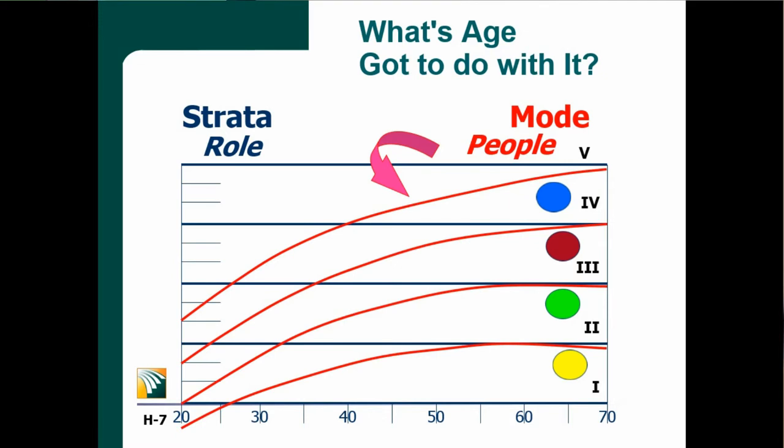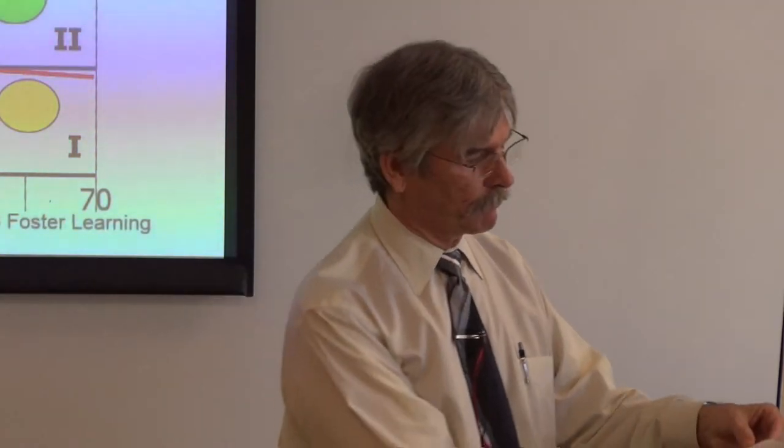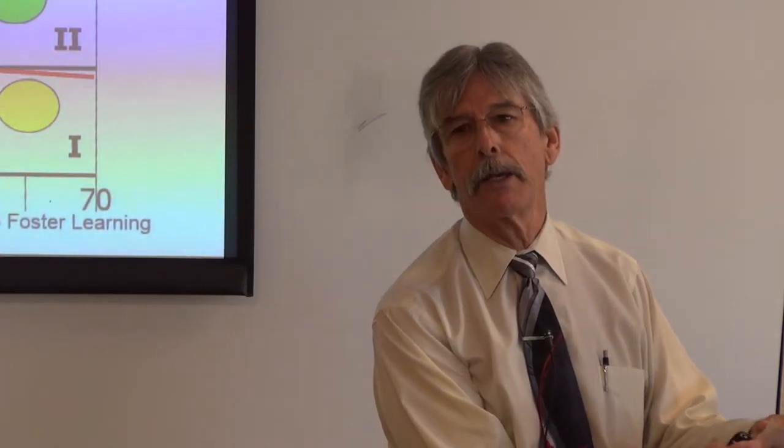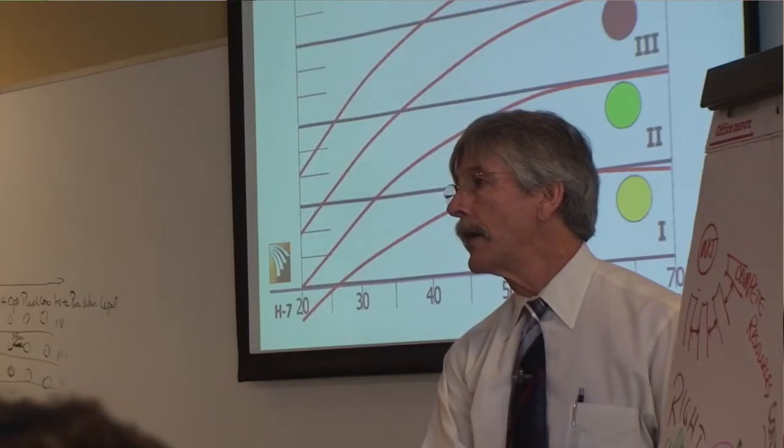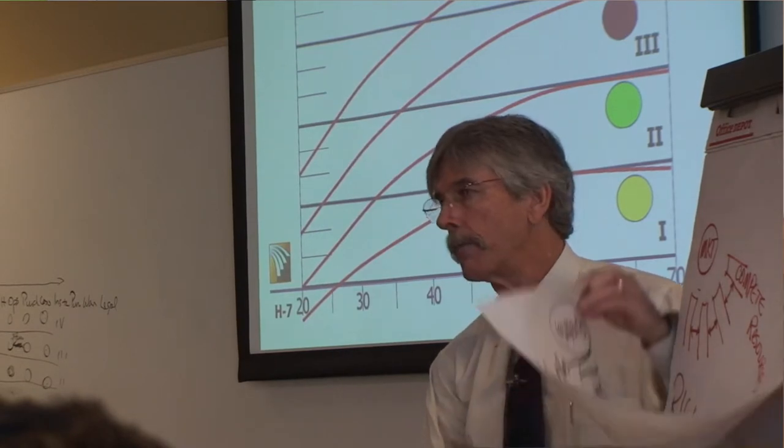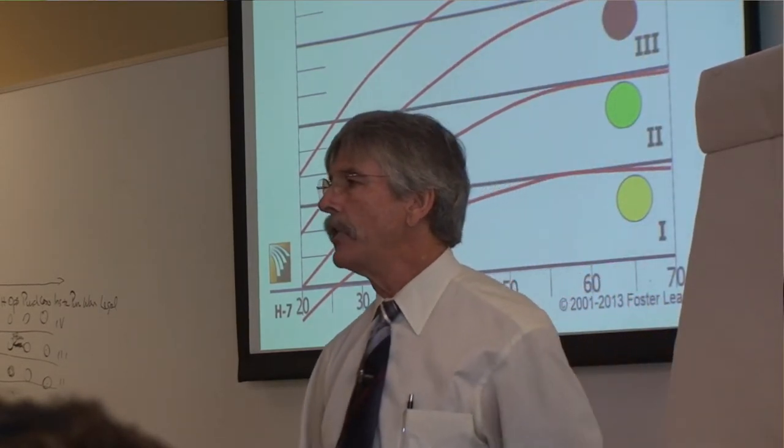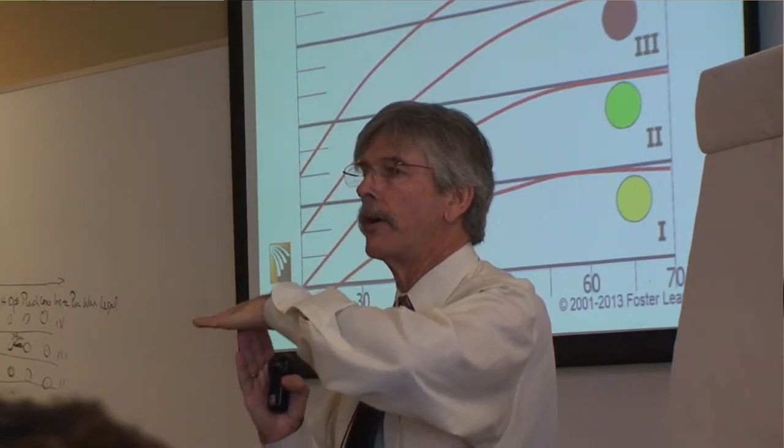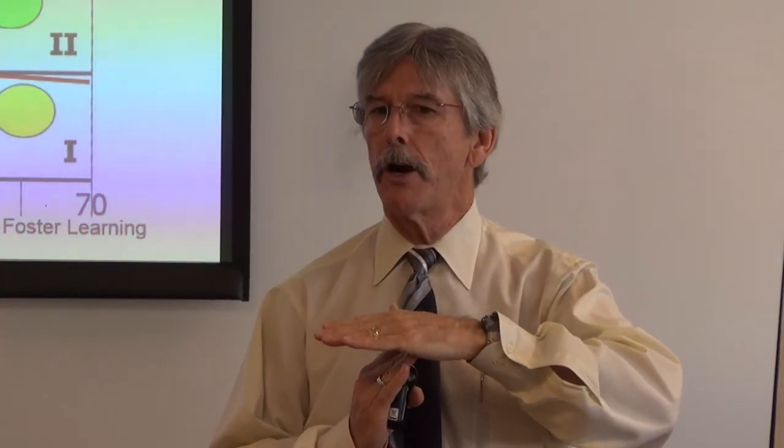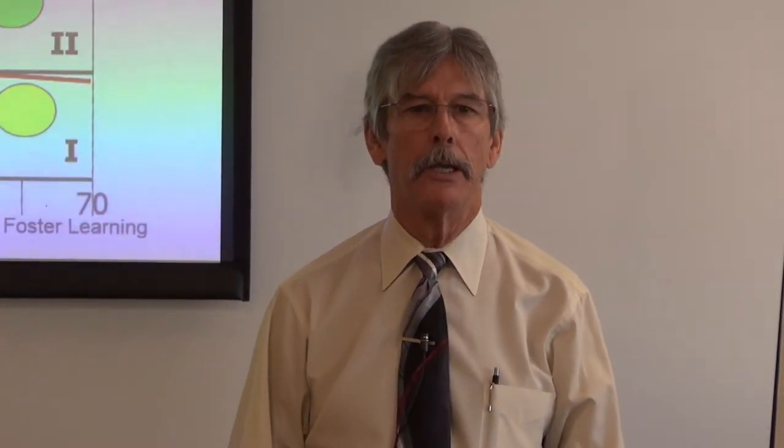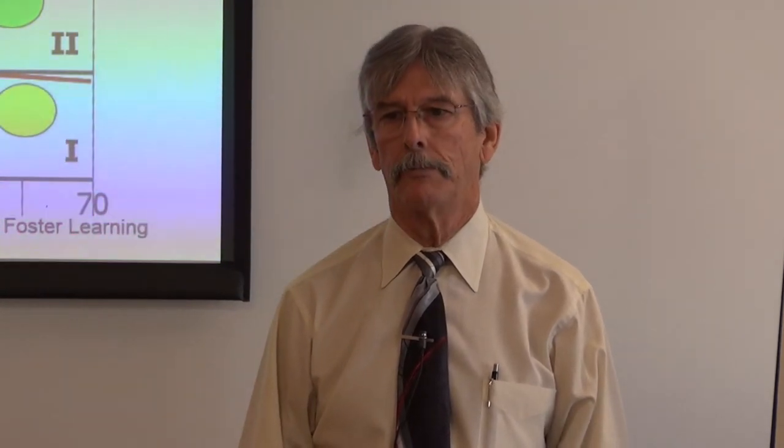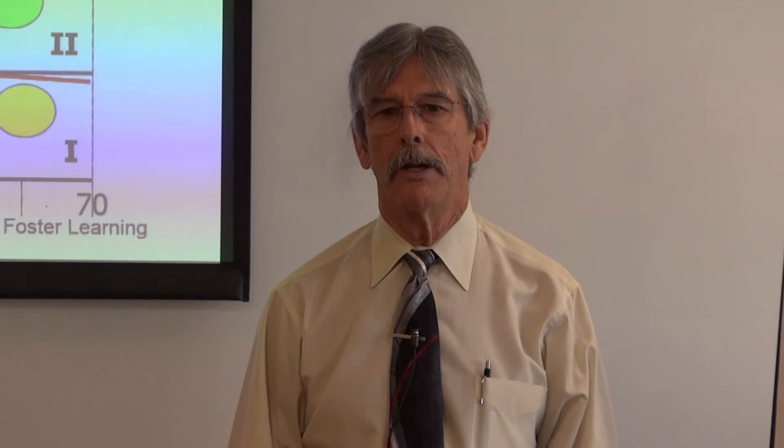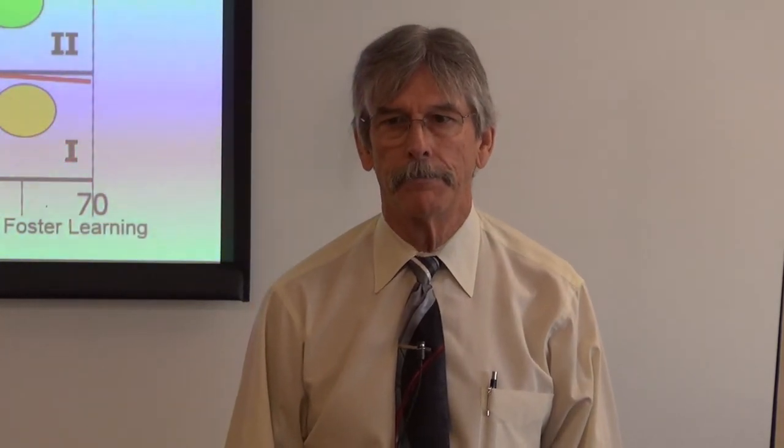This potential progression chart is a visual depiction of a person's time span capability as they grow through their lifetime. Question. If you could accurately assess a person's time span capability, you could understand that they were effective in a specific level of work, and you also knew their age. So you knew their level of work, and you knew their age. Could you plot them on this chart? And if you could plot them on this chart, could you then predict their capability one year into the future? Five years into the future. Ten years into the future.